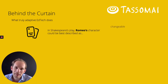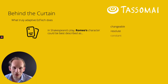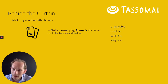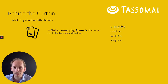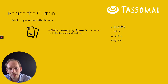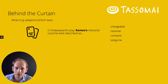Here's an example of a quiz card — like a flash card — that we might put in a TASMI question. In Shakespeare's play, Romeo's character could be best described as: changeable, resolute, constant, or sanguine. We'll also have questions that explain such fancy words as sanguine.